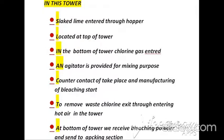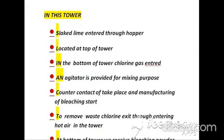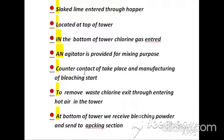In this tower, slaked lime enters through the hopper at the top. Chlorine gas enters from the bottom of the tower. An agitator is provided for mixing purpose, and counter-current contact of both takes place. To remove waste chlorine or gases, hot air is entered from the bottom. After complete mixing, bleaching powder is obtained from the bottom of the tower and sent to the packing section.